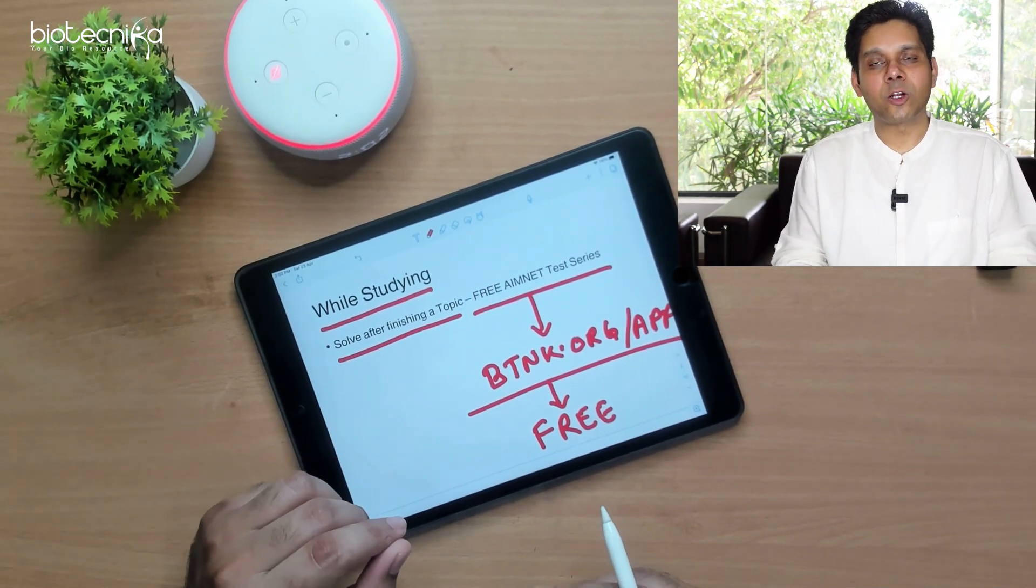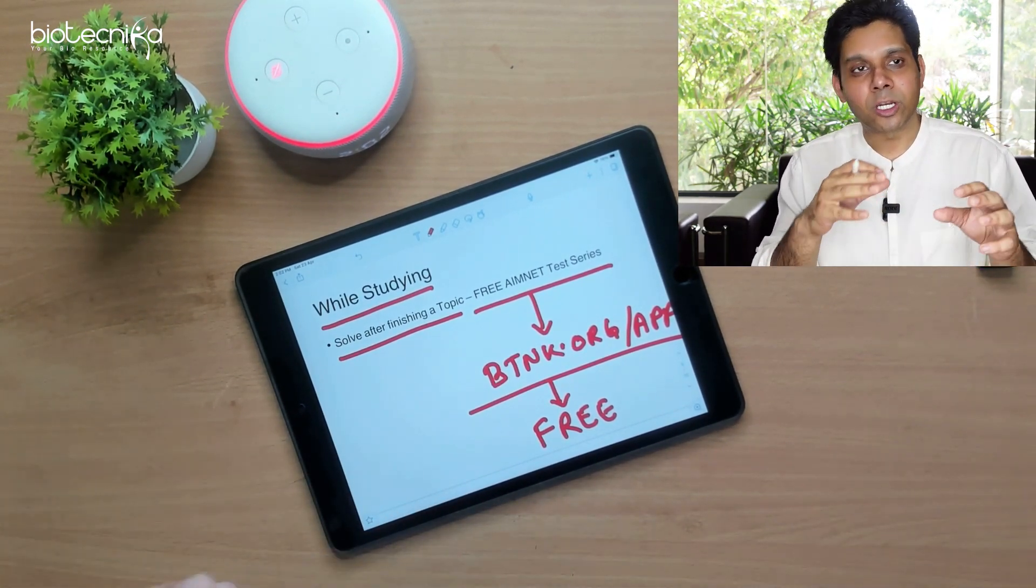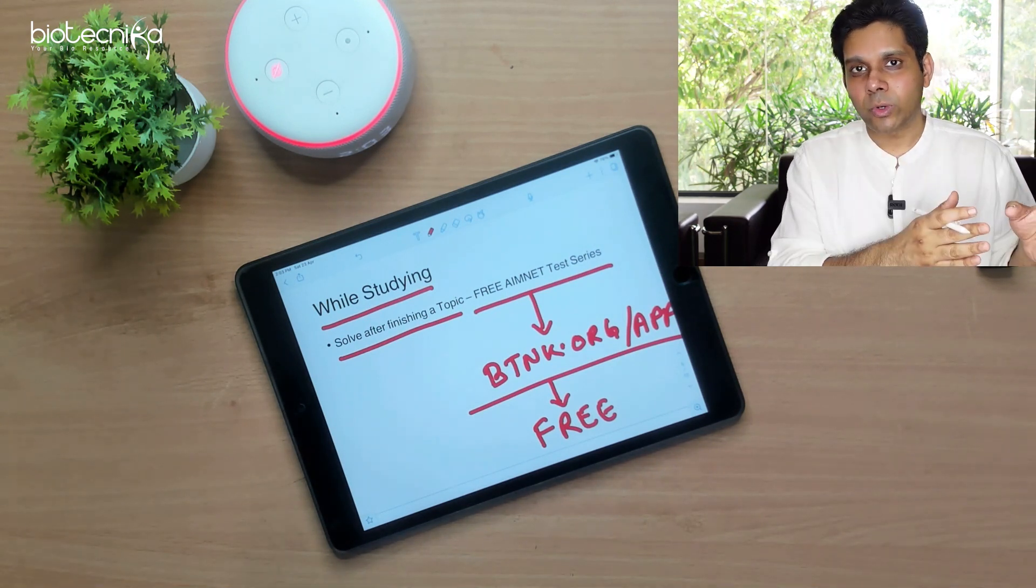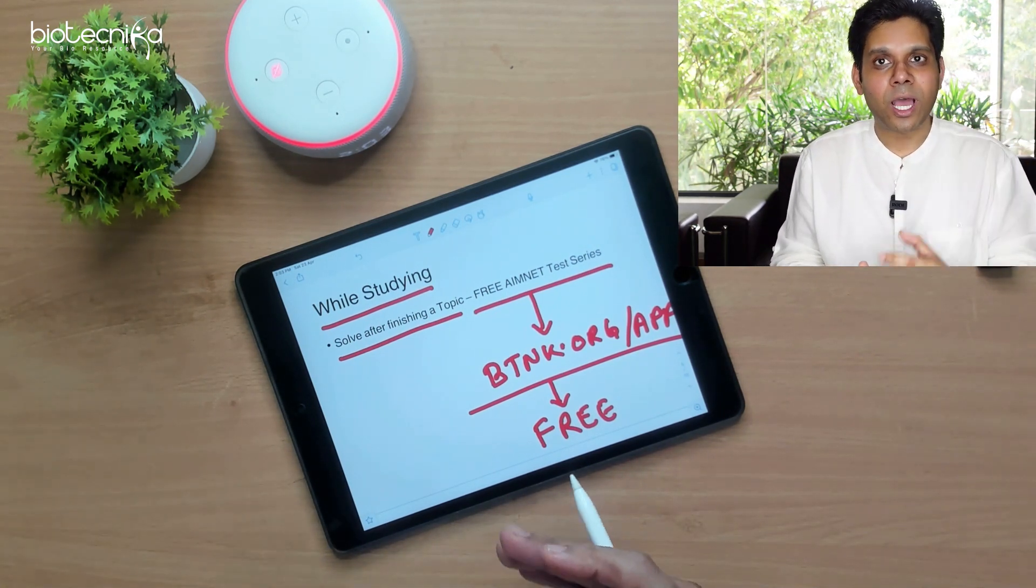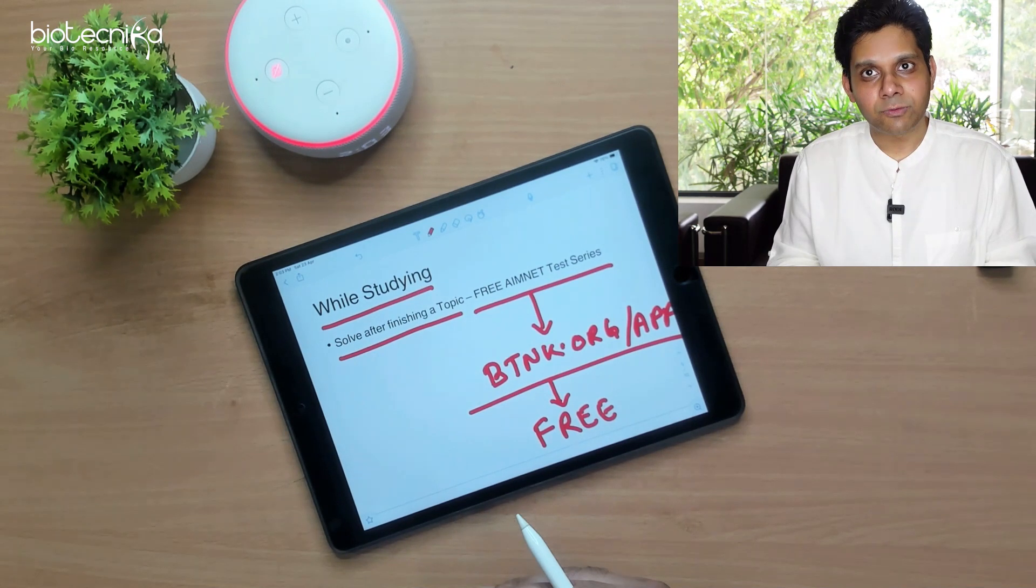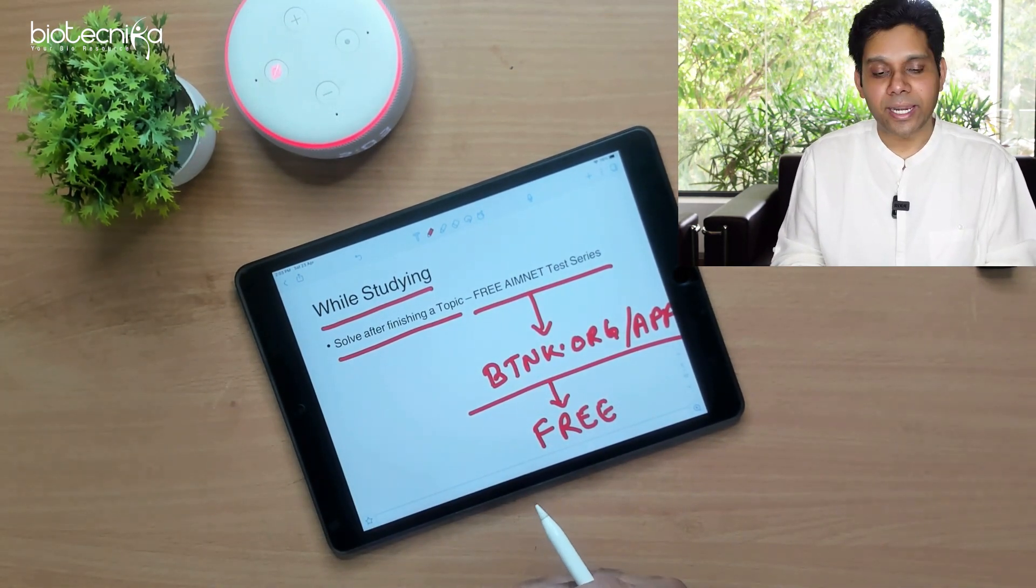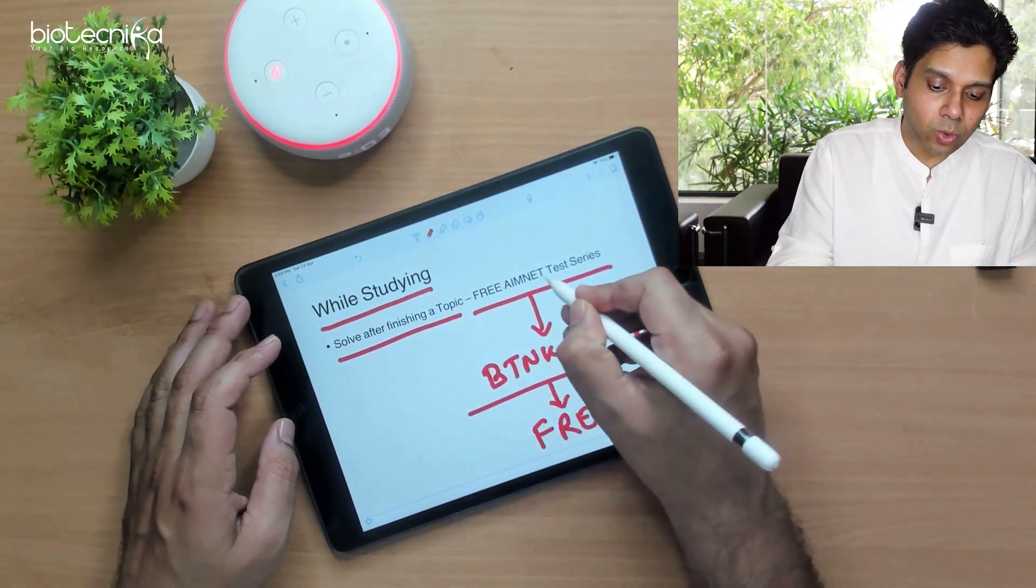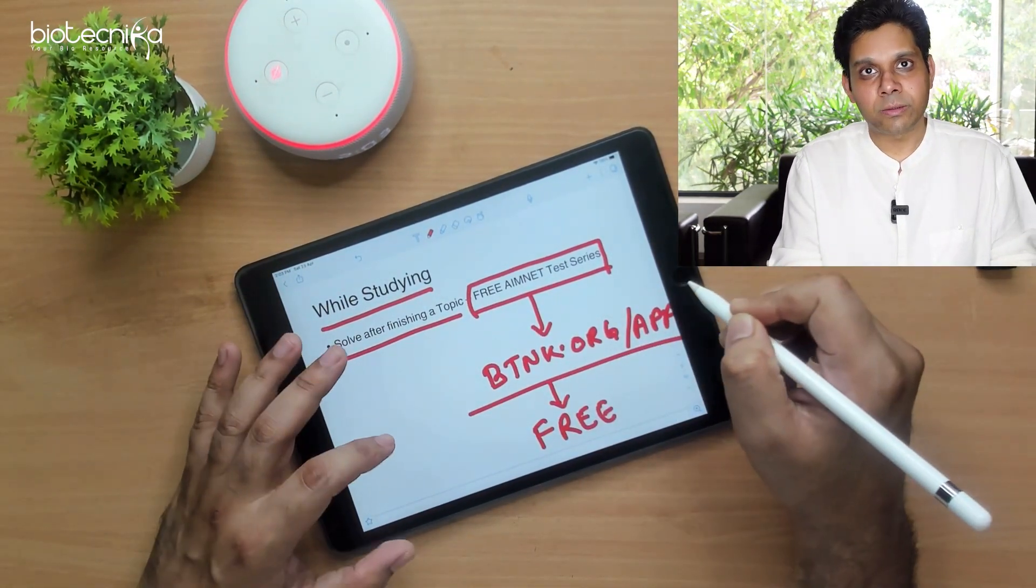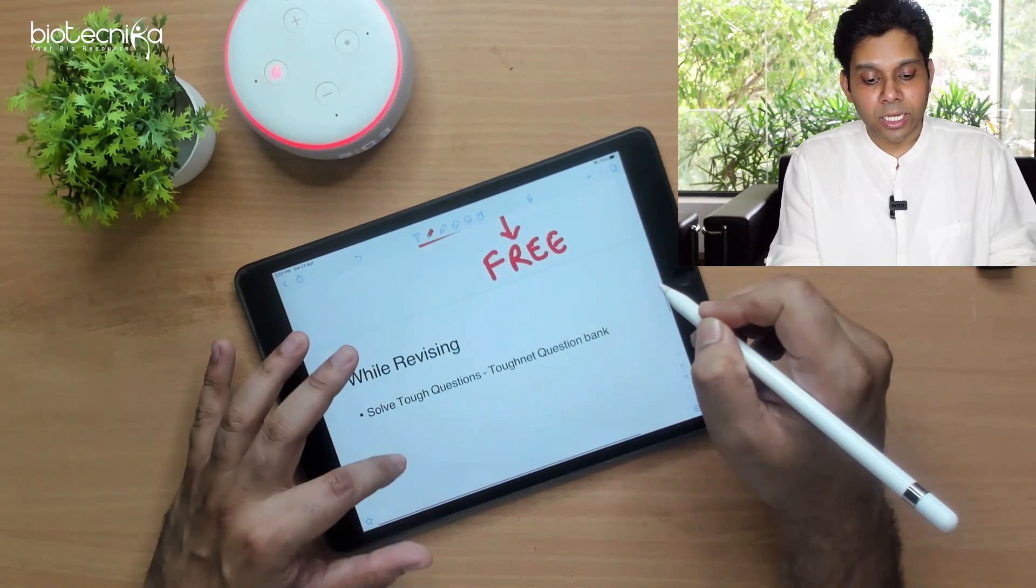Now it is very difficult to segregate. Suppose you studied Unit 1 to go and check what questions came from Unit 1. We do have question banks with us which is called as NetJRF Pro as well as ToughNet which will come handy for that. So while studying, you can go for the MNET test series which is available for free in the Biotechnica app.